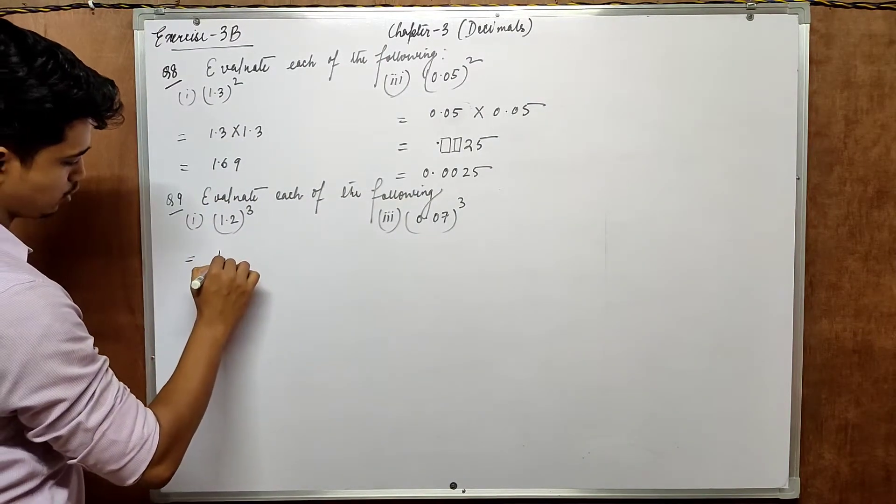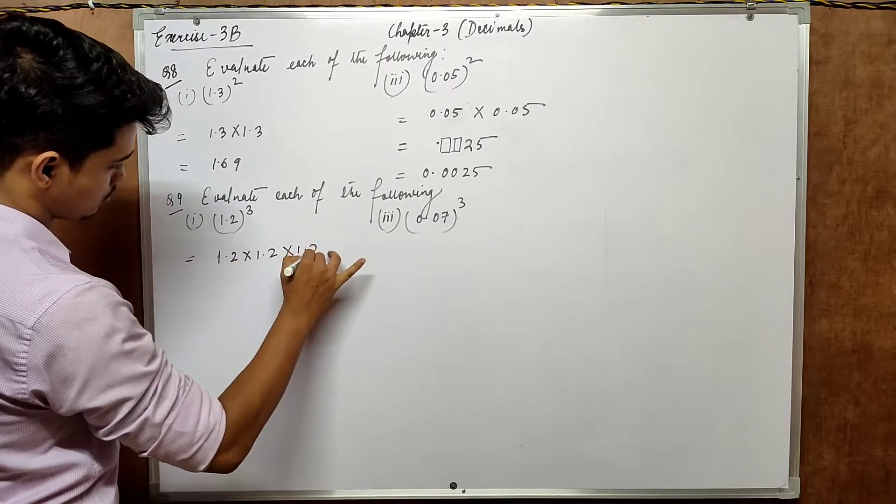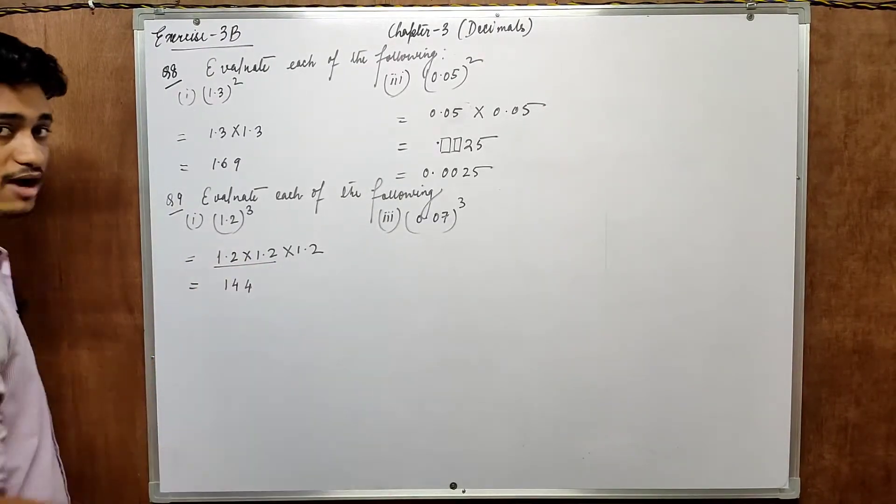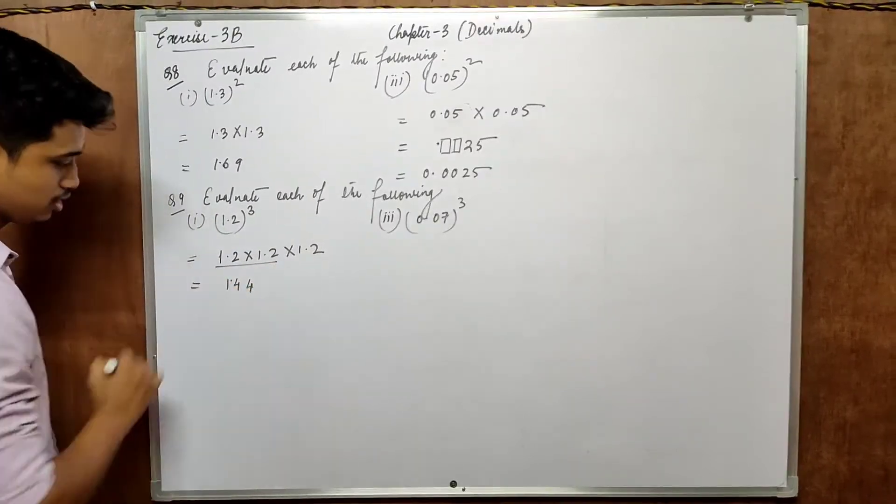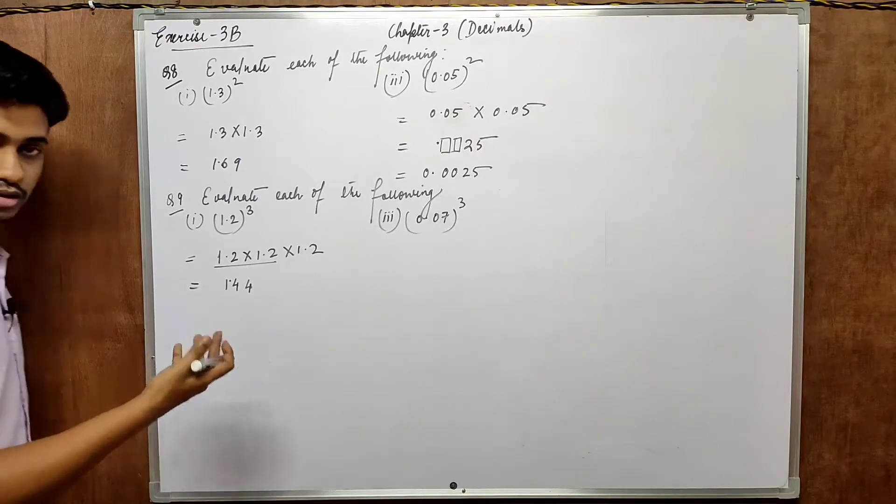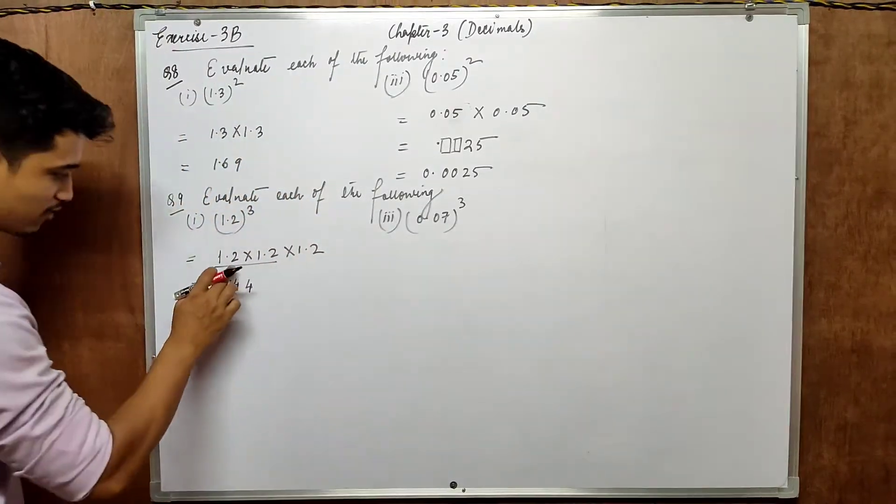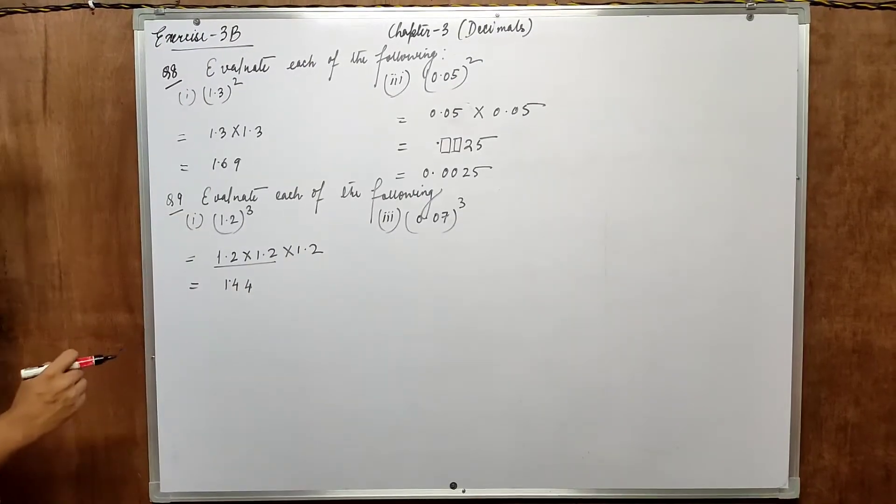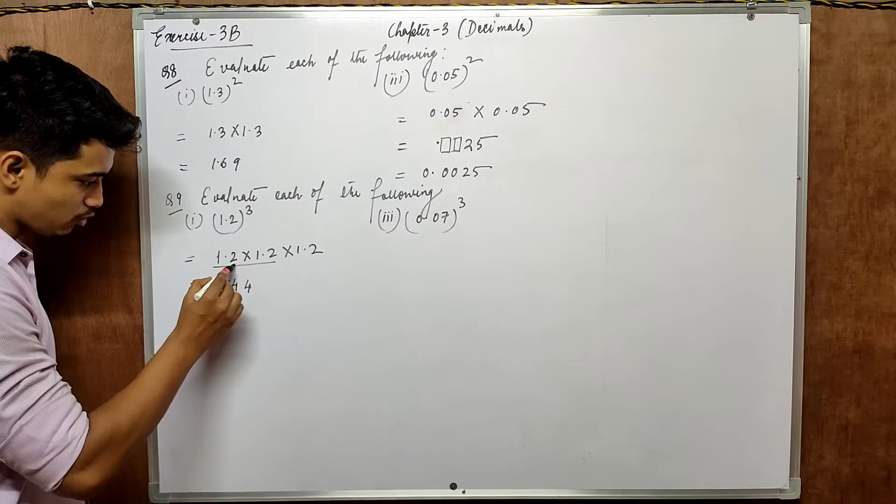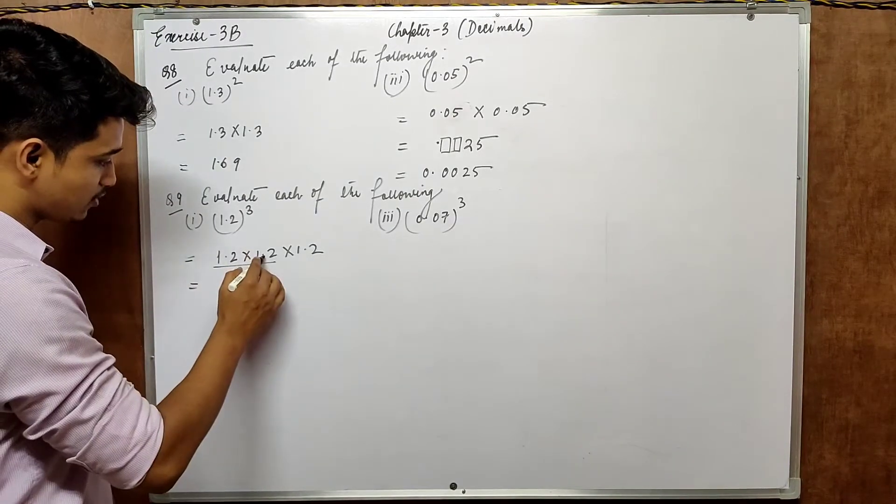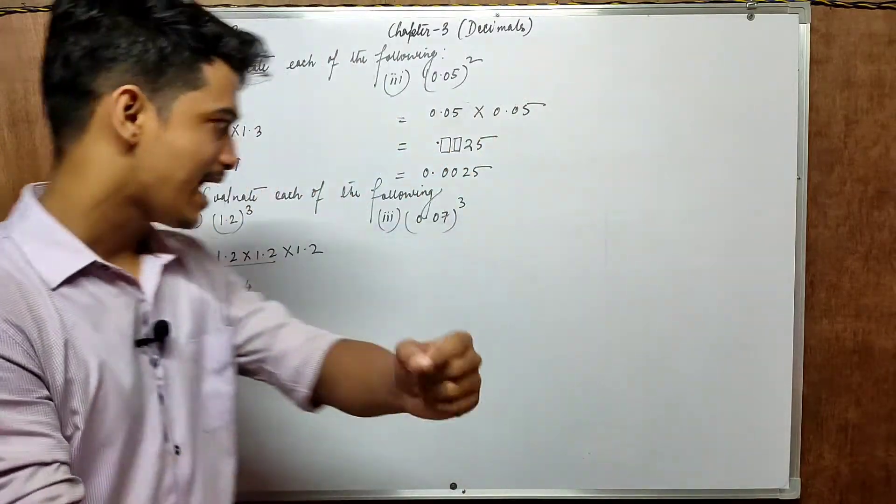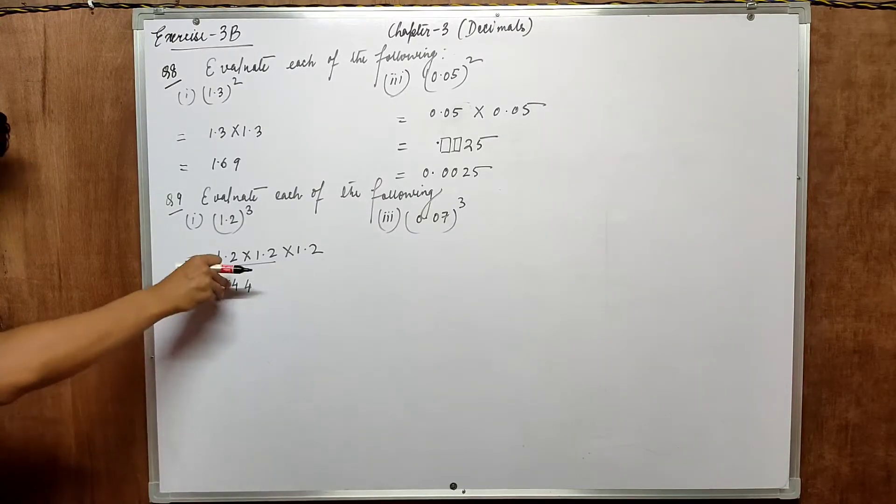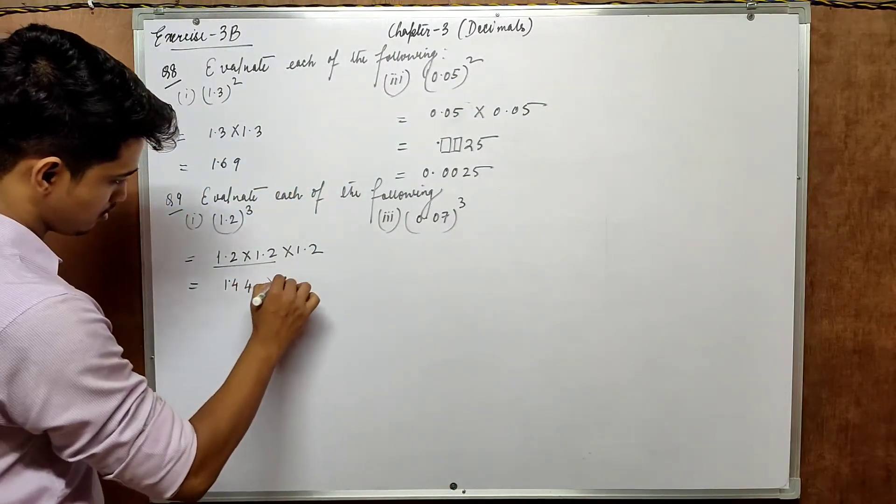Question number 9, evaluate each of the following, same process. Here it is cube. So what we need to do is 1.2 into 1.2 into 1.2. We know 12 square is basically 144. So in between these two multiplications, how many digits are there after points? 2. After point, there is one digit. After point, there is one digit. So collectively, it will become 2. 1 plus 1, 2. And we just count from the right in the answer block. 1 and 2 and put 1 point.